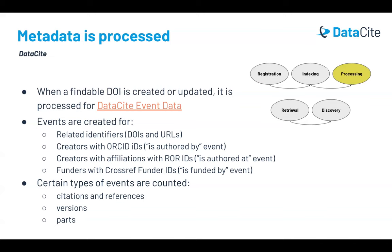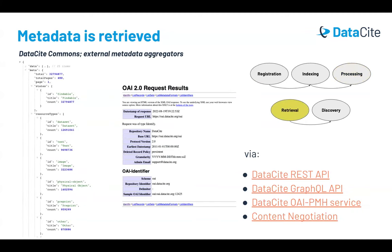It's important to note that this processing does not change the DOI metadata itself. Event data is built using DOI metadata in order to enable additional services. Datasite metadata is retrievable through our APIs and services. These services include our public APIs, like the Datasite REST API, the Datasite GraphQL API, which is used by our search interface Datasite Commons, and our OAI-PMH service, which is mainly used by harvesters. There's also DOI content negotiation, which enables metadata retrieval in several different formats, including schema.org and JATS.